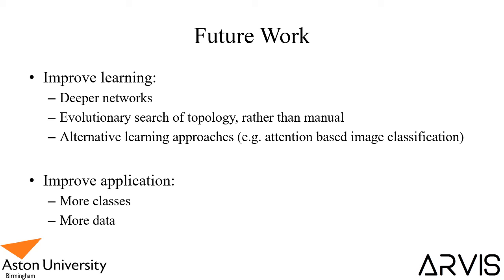In the future, we want to improve learning with deeper networks. We only had one interpretation layer with a linear manual search of 2 to 4096 neurons, so we may perform an evolutionary search to find a better network topology too complex to discover with linear search. There are also alternative learning approaches — the state of the art for image classification is moving from CNNs toward attention-based classification, similar to what's happening in natural language processing. We also need to expand the application beyond six classes and 600–1,000 images per class, which will require more computational resources, but this project has strongly supported the hypothesis in the results we found.